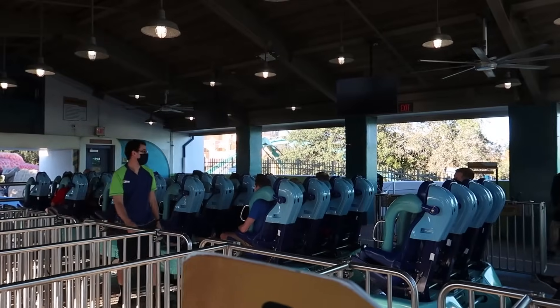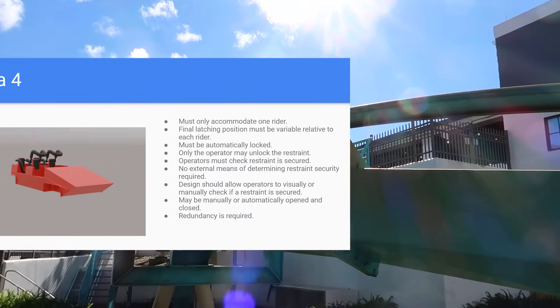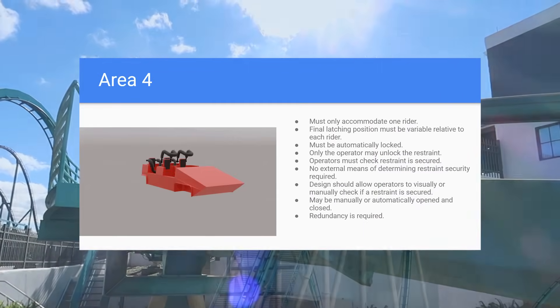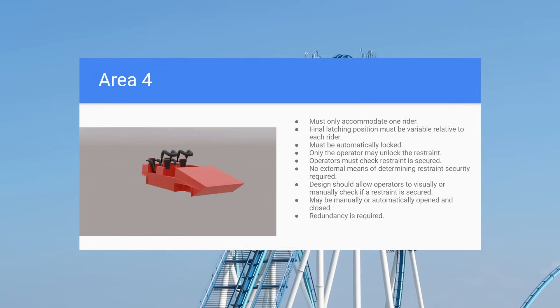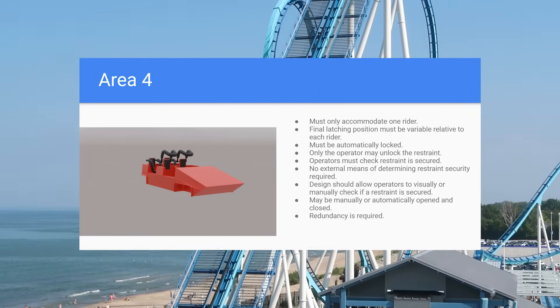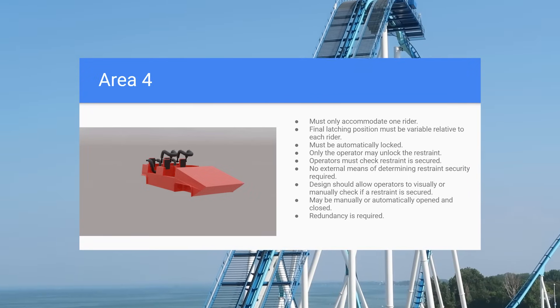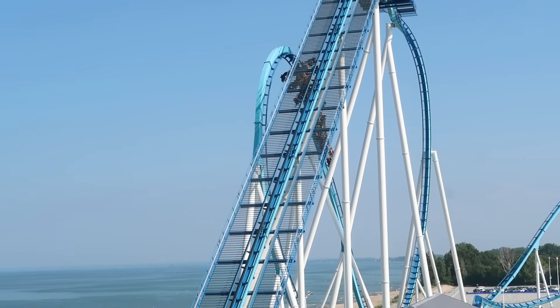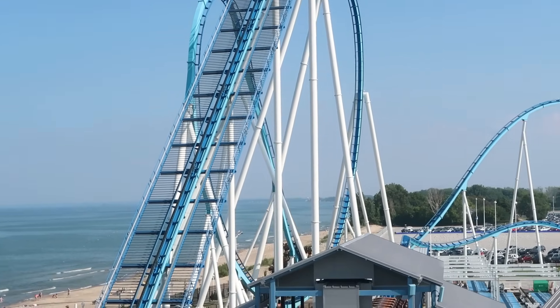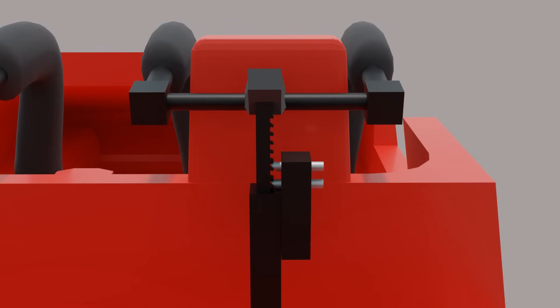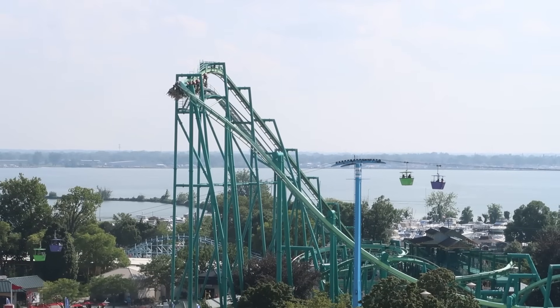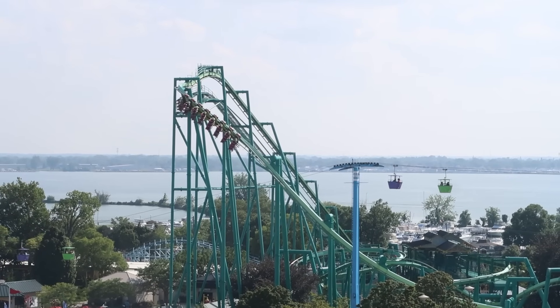Area 4 restraints step things up further by requiring one restraint be provided for each individual rider, requiring that restraints must be automatically locked, that only the operator has the ability to unlock the restraint, and that redundancy is now required. This redundancy can be achieved through multiple independent systems, such as two independent locking pins, or by a separate device like a seatbelt. Think of older B&M looping coasters with simple over-the-shoulder restraints like Raptor at Cedar Point.